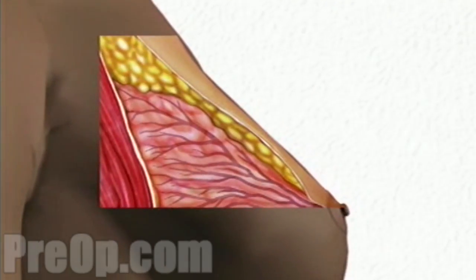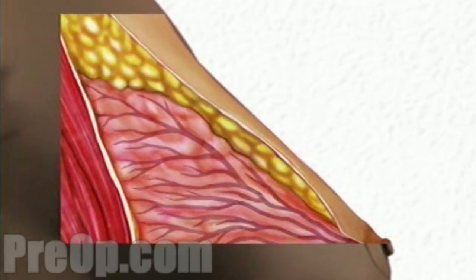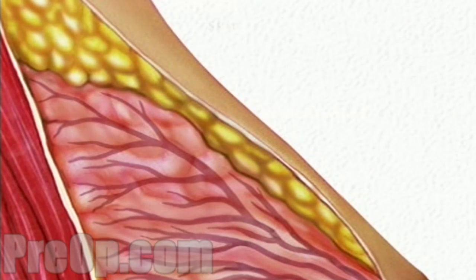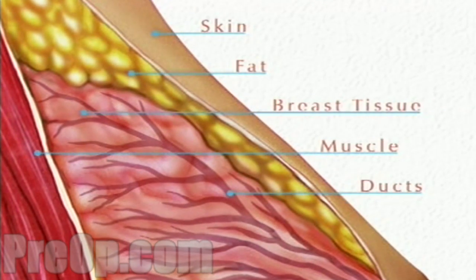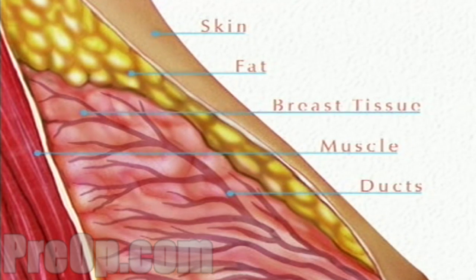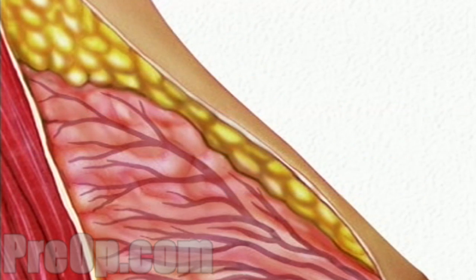Let's take a moment to look at the reasons why lumps form in breast tissue. The breast is made of layers of skin, fat, and breast tissue, all of which overlay the pectoralis muscle. Breast tissue itself is made up of a network of tiny milk-carrying ducts, and there are three ways in which a lump can form among them.